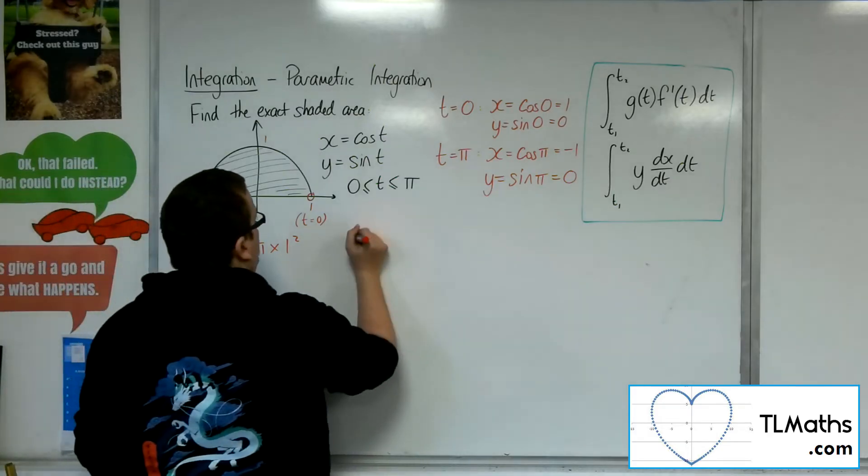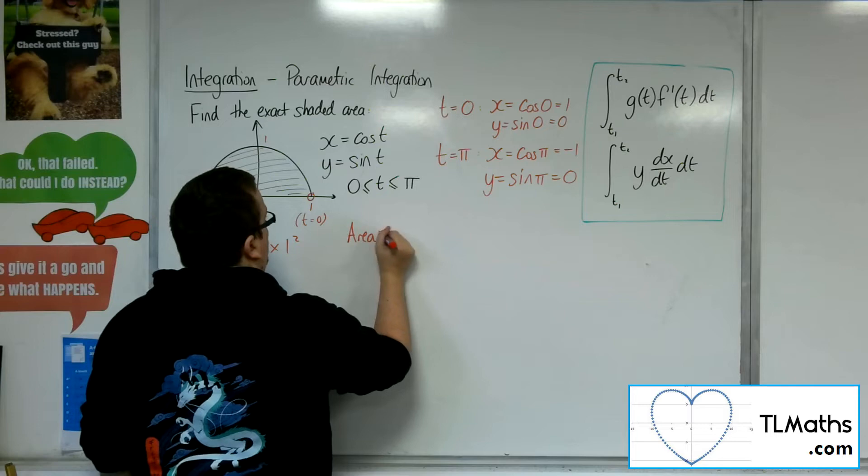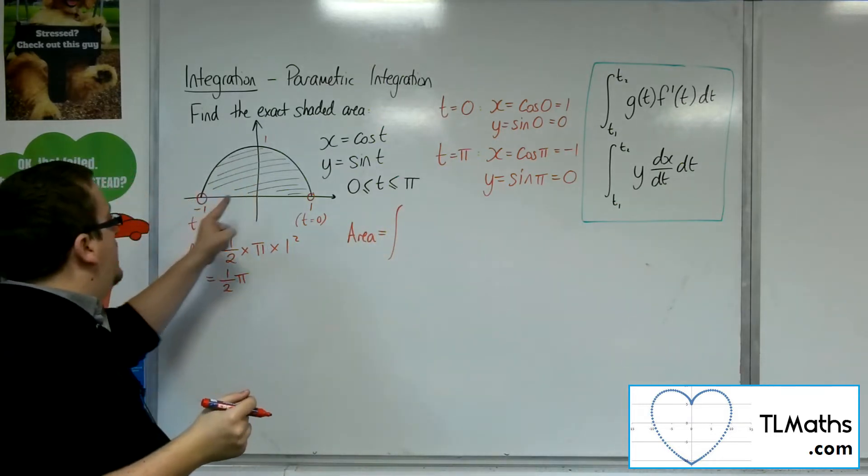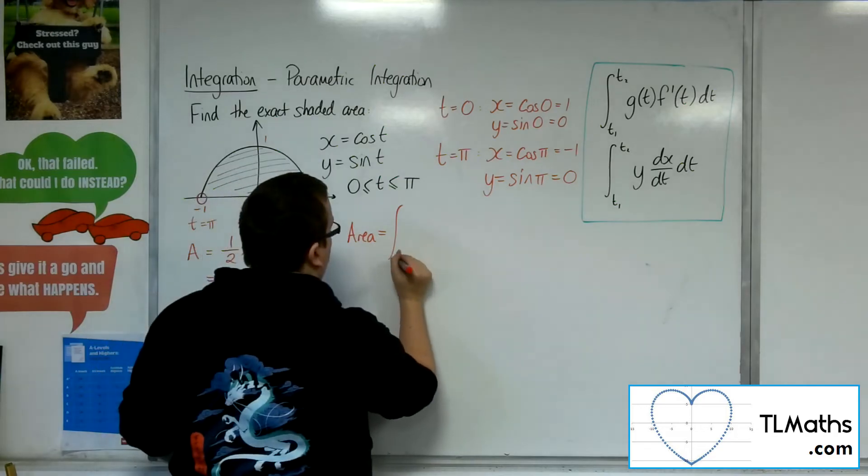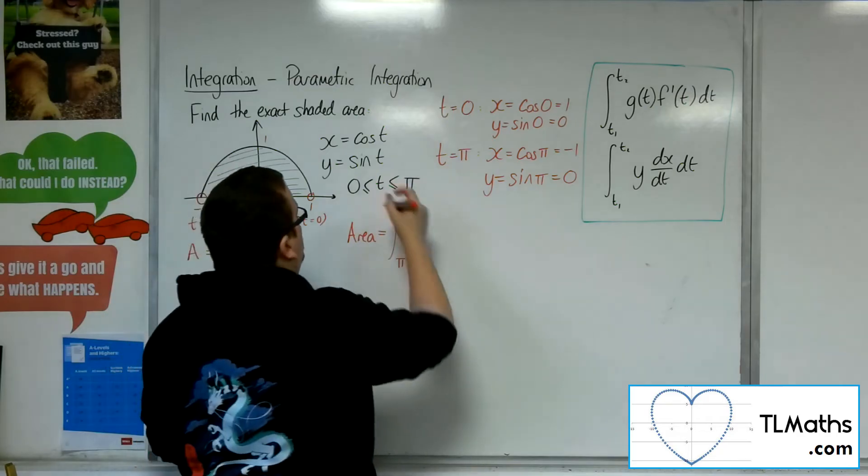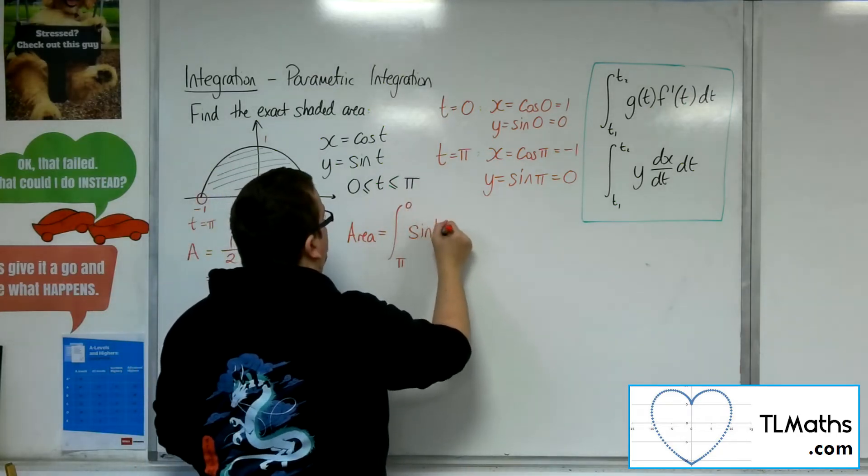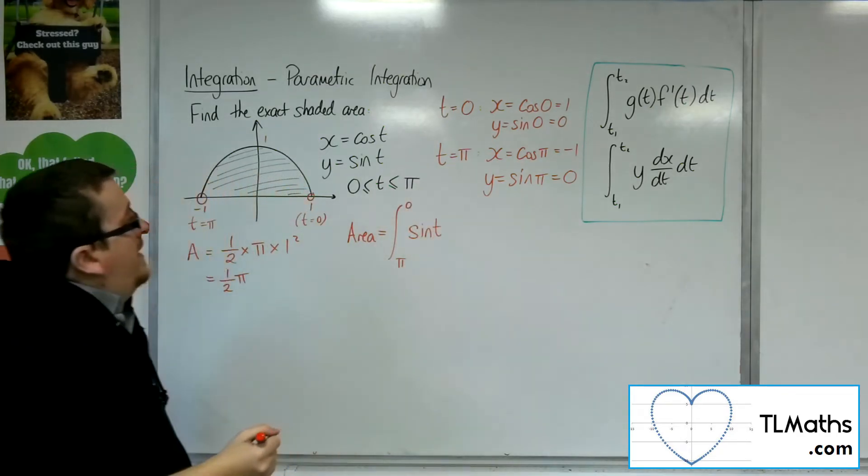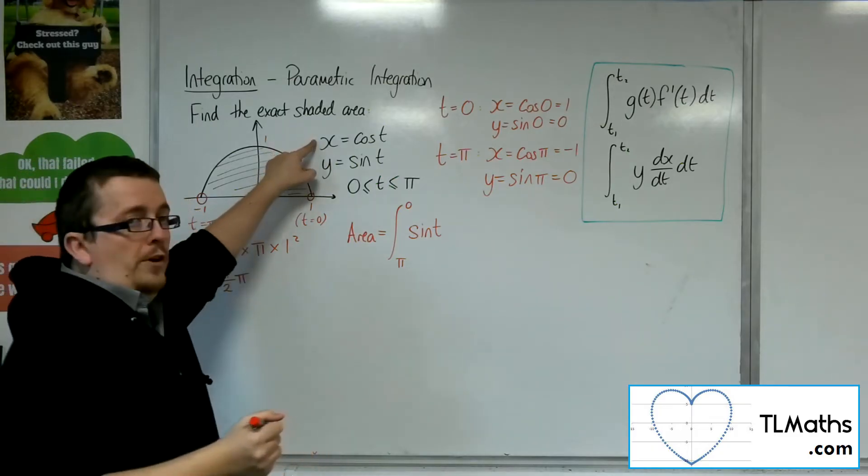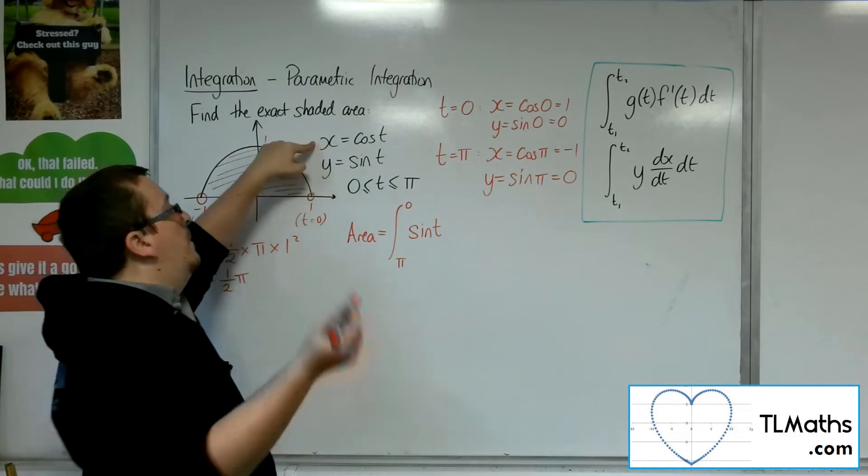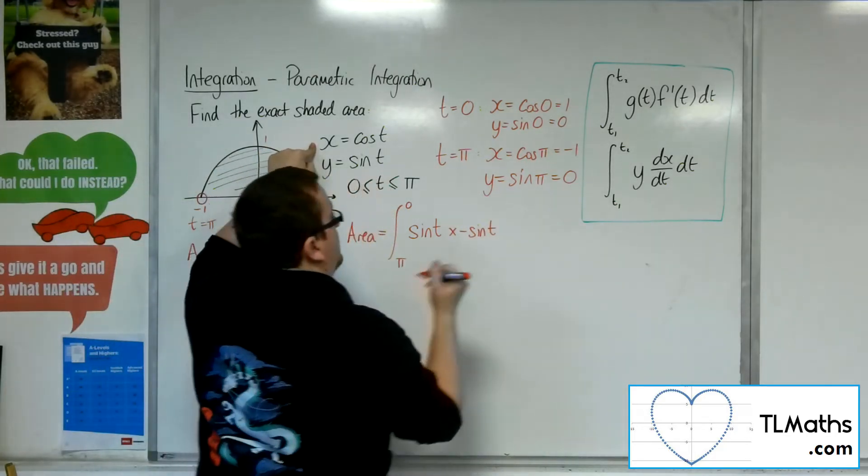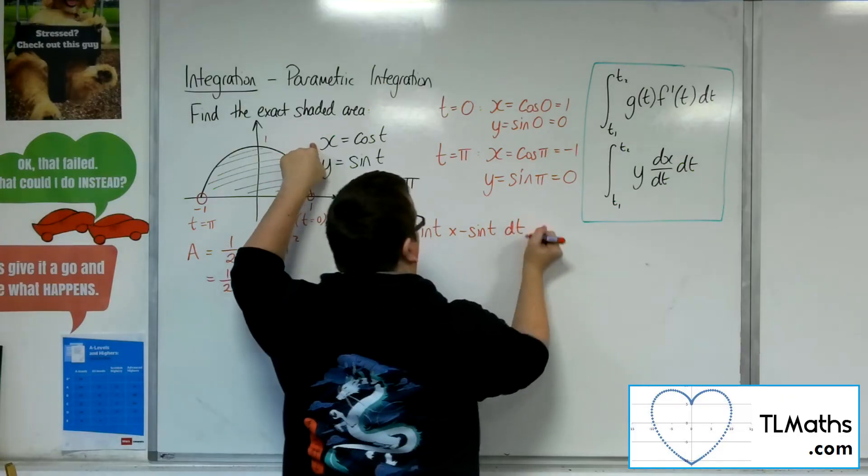So we'd be integrating, so the area, we would be integrating between t1 and t2, so from pi to 0. Get those limits around the right way. And then we've got y, which is sine of t. And then we've got dx by dt. So cosine of t differentiates to minus sine of t dt.